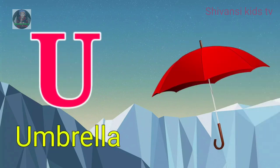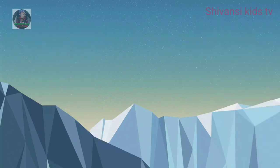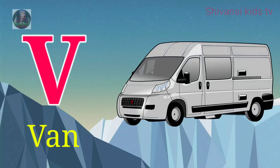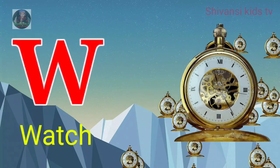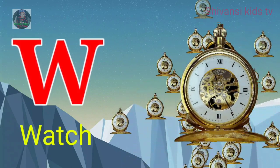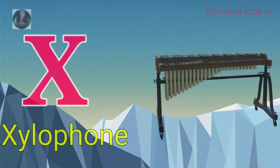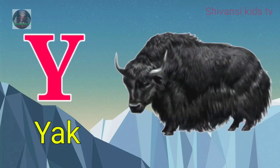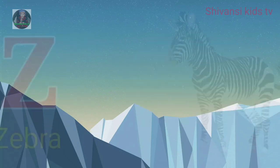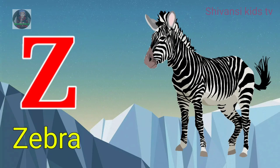U for umbrella, V for van, W for watch, X for xylophone, Y for yard, Z for zebra.